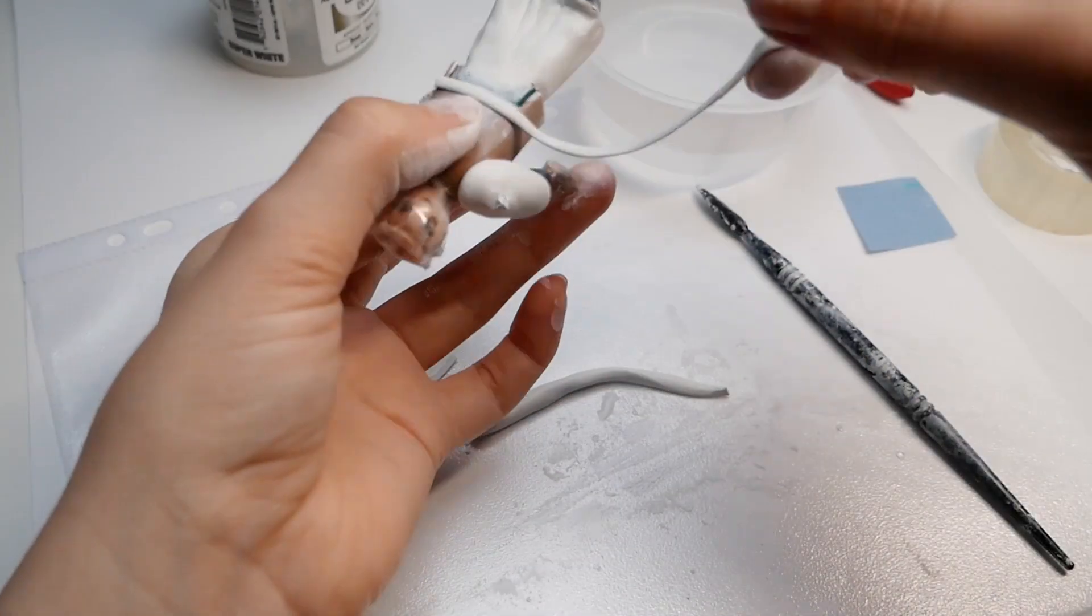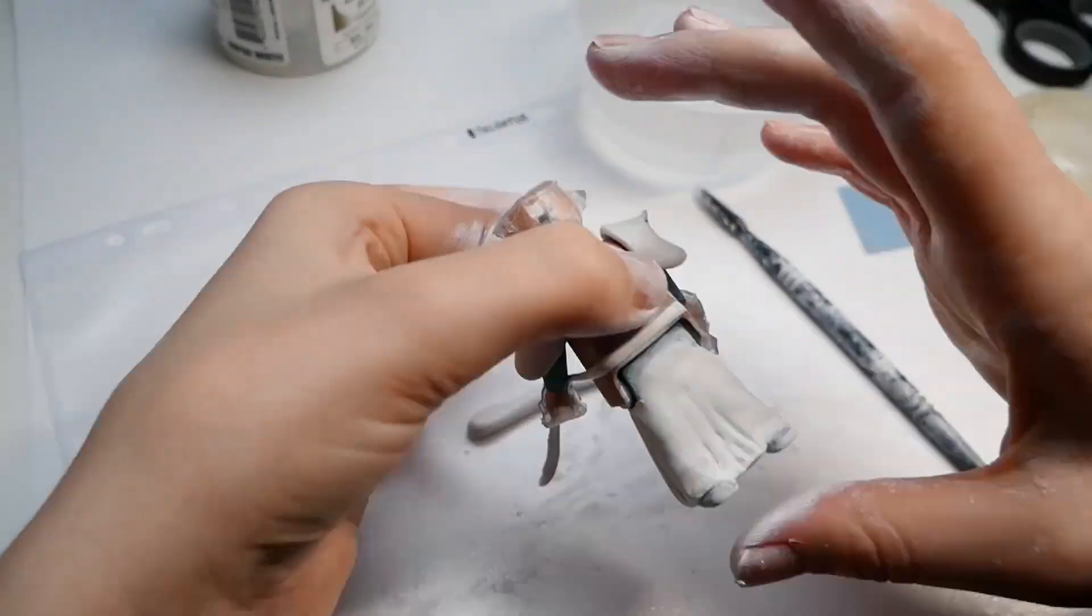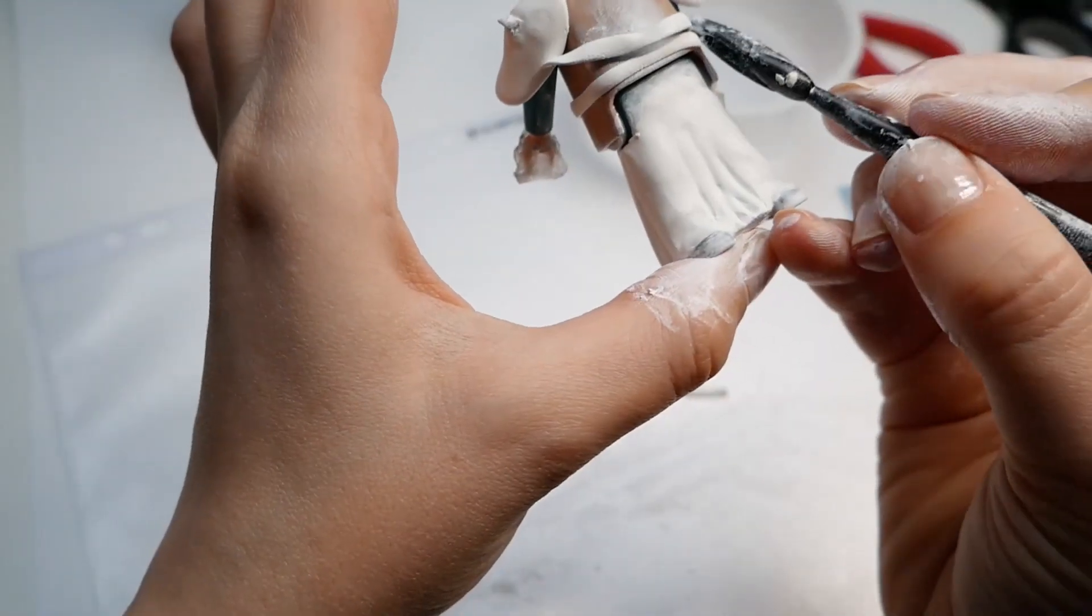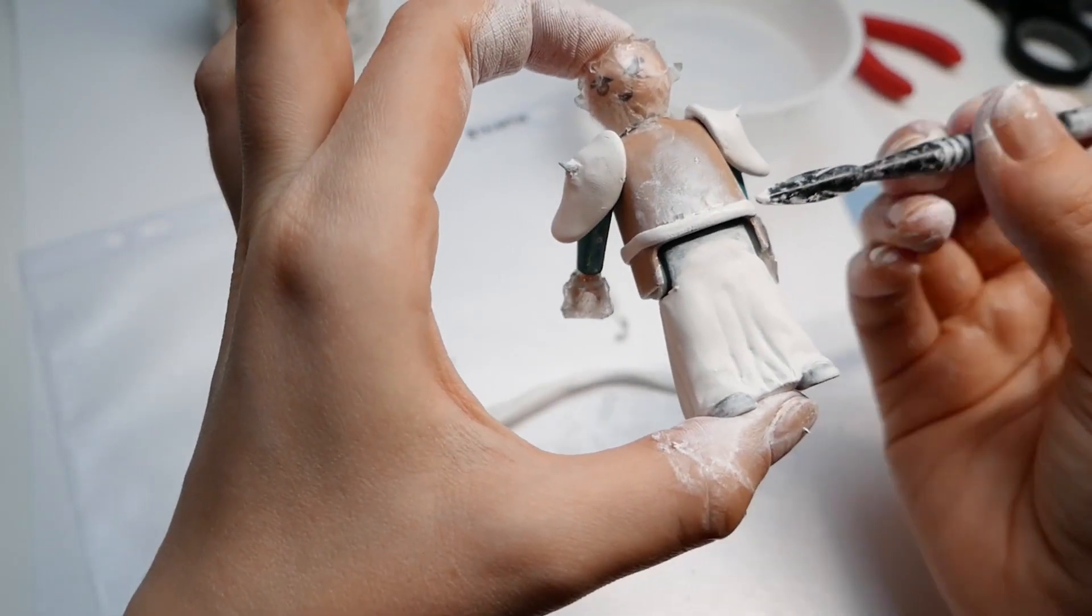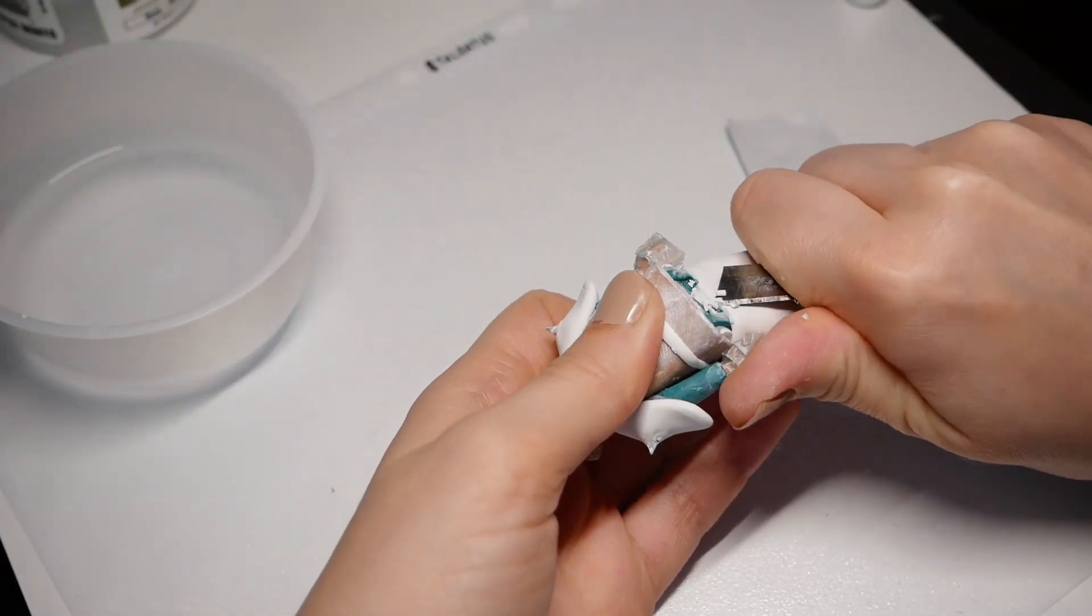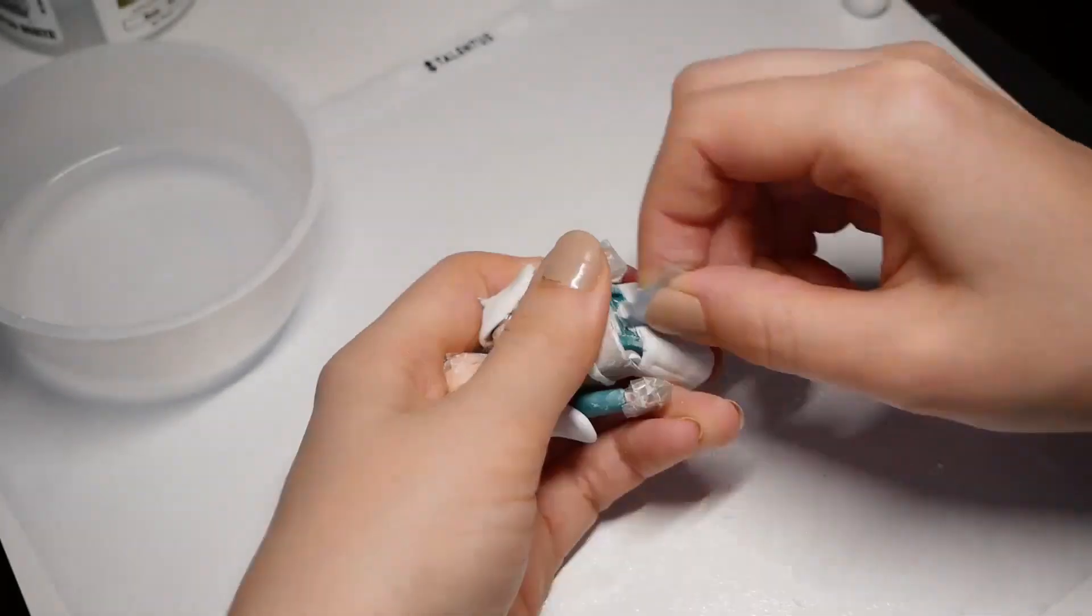For the belt, I made a long sausage, pressed it with my fingers to make it flat, and just rolled it around his waist. Everything that looks rough, I can sand when the material is dry, or if it's too much material I can also cut it with a knife and then sand.